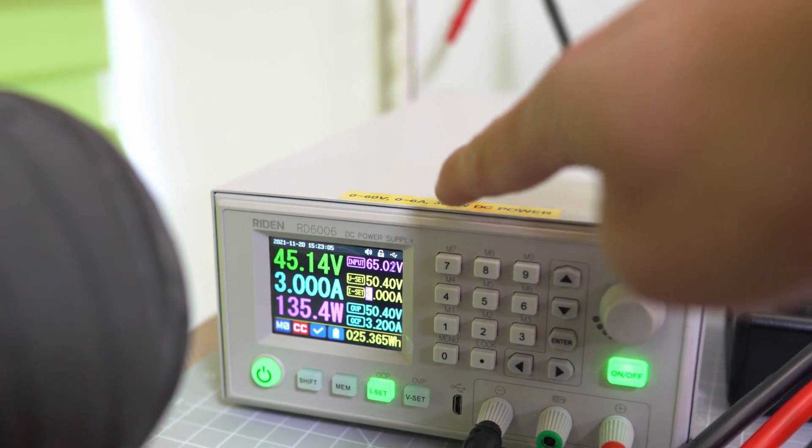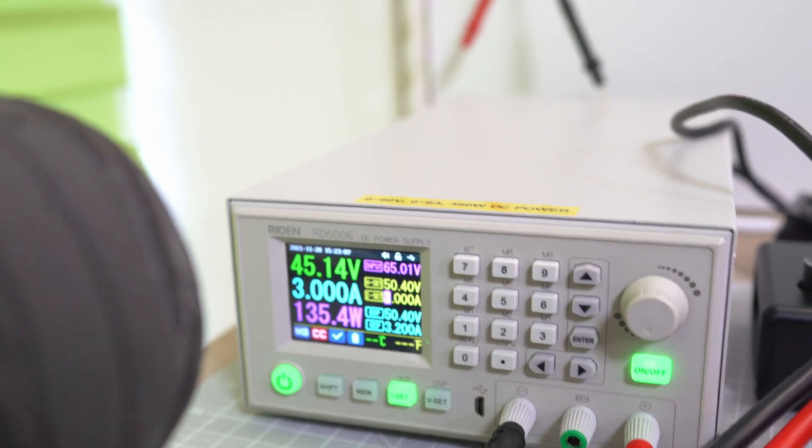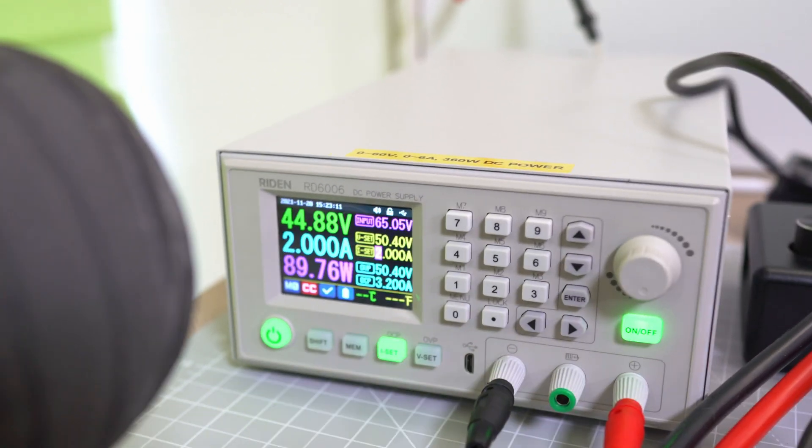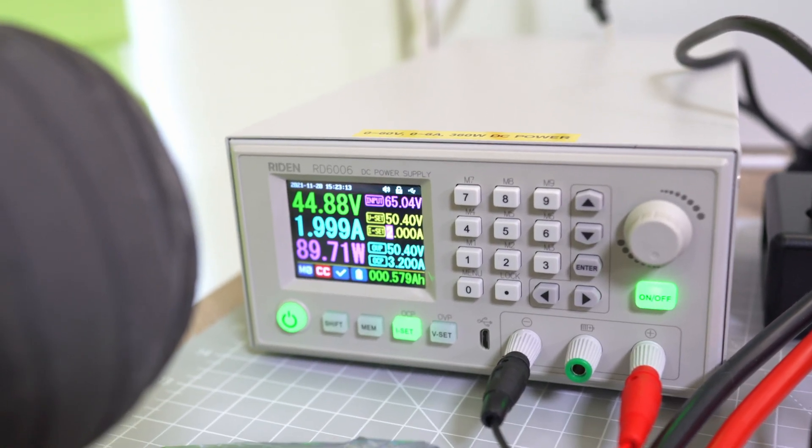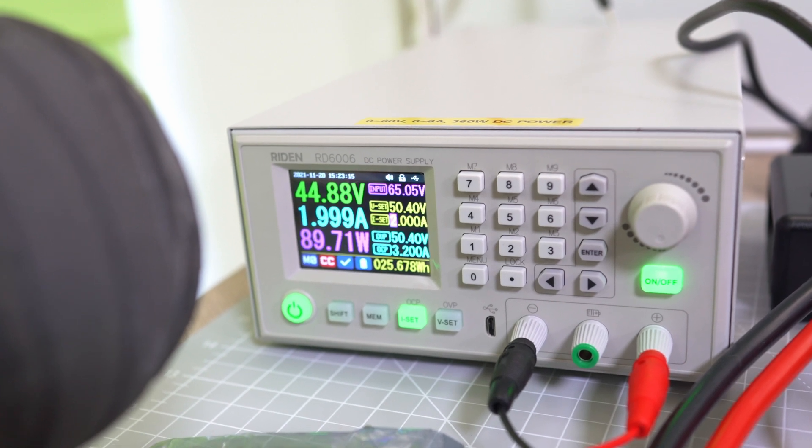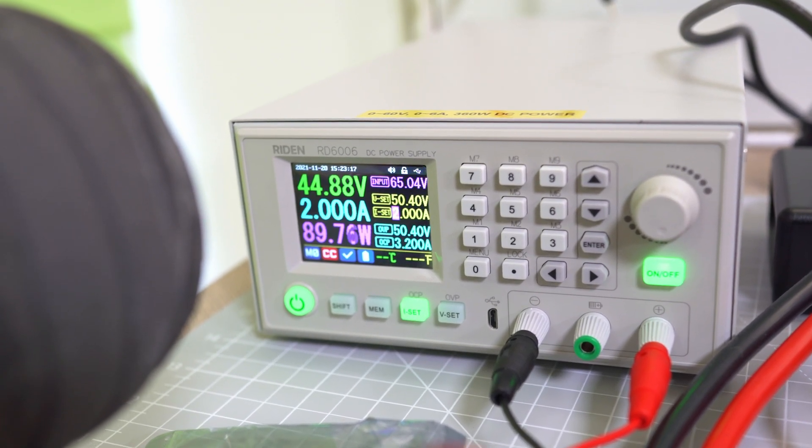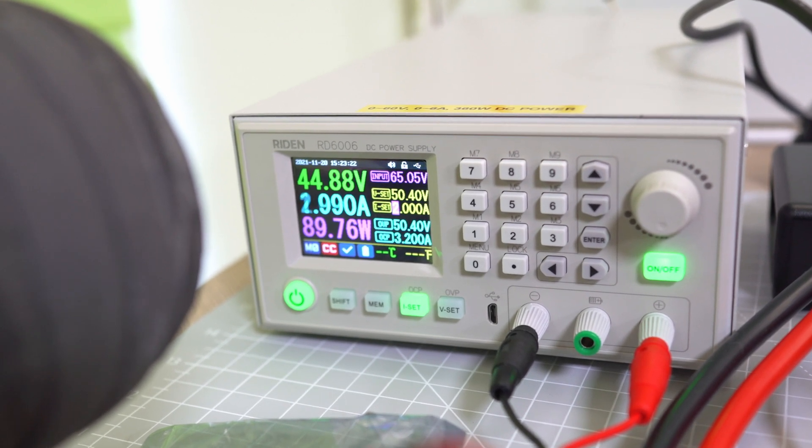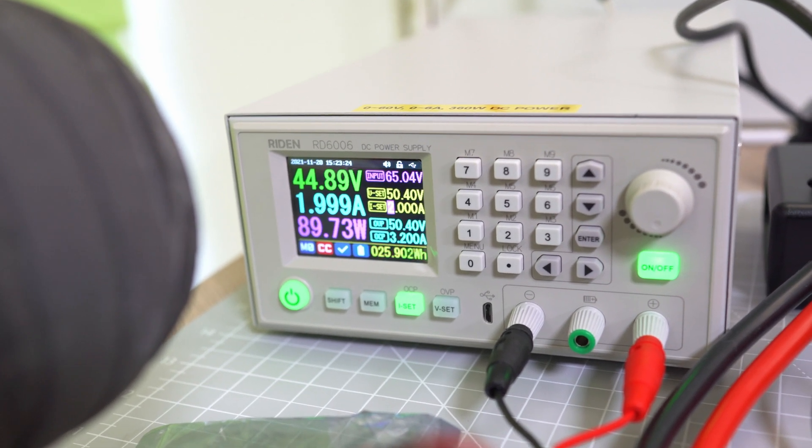You can also charge up to 6 amps, which is nice, but I usually like to charge slower because fast charging means you're gonna degrade your battery faster. For example, if you slow charge it, you're gonna get probably a few hundred more charges out of it.